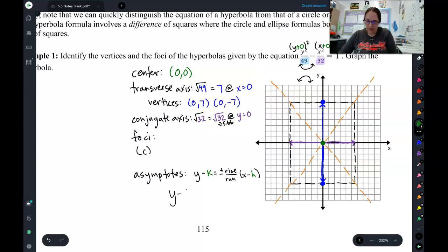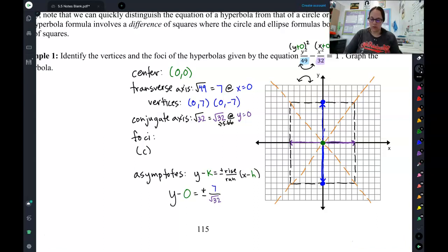Y minus, my center is 0 comma 0. Plus or minus looks like I am rising 7. So I rose 7, and then I am running square root of 32. So I rose 7 in my guide rectangle, ran square root of 32. And then I have x minus 0. Sweet.